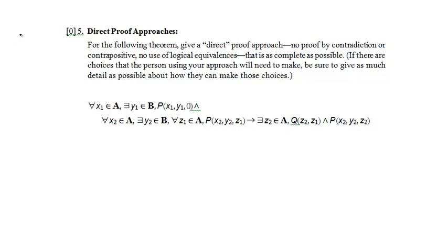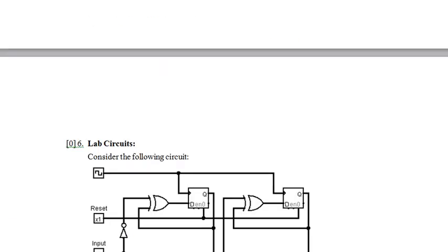This next question asks for a direct proof approach - no proof by contrapositive or contradiction, no logical equivalence - that is as complete as possible. This is the typical direct proof approach problem we've seen before. It's a big theorem but it'll be straightforward. When I see a universal quantifier, I'm going to use without loss of generality to strip it off. I'll definitely come back to this problem; I know just how to solve it, though it might take a little time.